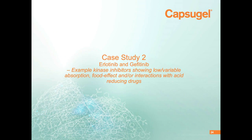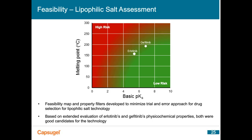Moving on to more recent data from the Capsigel–Monash collaboration, I'd like to focus on erlotinib and gefitinib. We are using these compounds as example kinase inhibitors since many compounds in this class demonstrate low or variable exposure, moderate to extensive food effects, and interactions with acid-reducing agents. As we've worked with more compounds in this technology, we've begun to identify the edges of its applicability and now perform a risk assessment before analyzing any new compound. For basic compounds, two key factors we consider are the melting point of the free form and the basic pKa. Based on these properties, both erlotinib and gefitinib were considered good candidates for the technology.